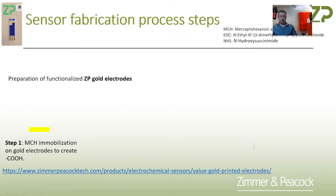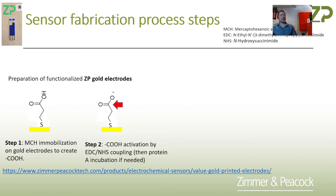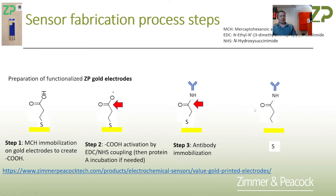With gold electrodes, the typical process is: you take a gold electrode, put a thiol molecule onto it using self-assembled monolayer chemistry, then activate the other end of the molecule — in this case a carboxylic acid — using EDC-NHS coupling. You then put an antibody onto that through an amide bond to make an immunosensor. If instead you use DNA rather than an antibody, you could be making a molecular assay. You can then block the surface with BSA, bovine serum albumin.